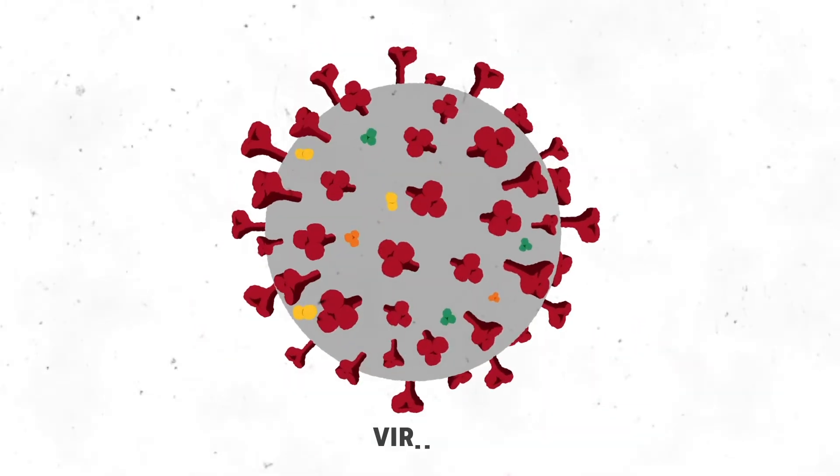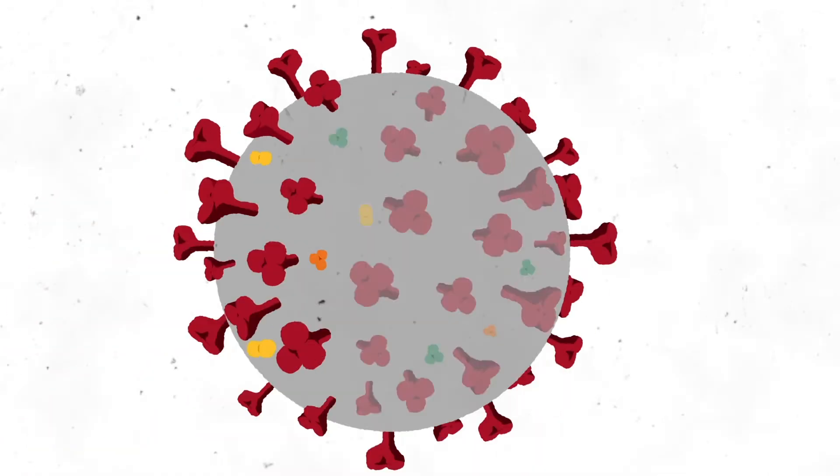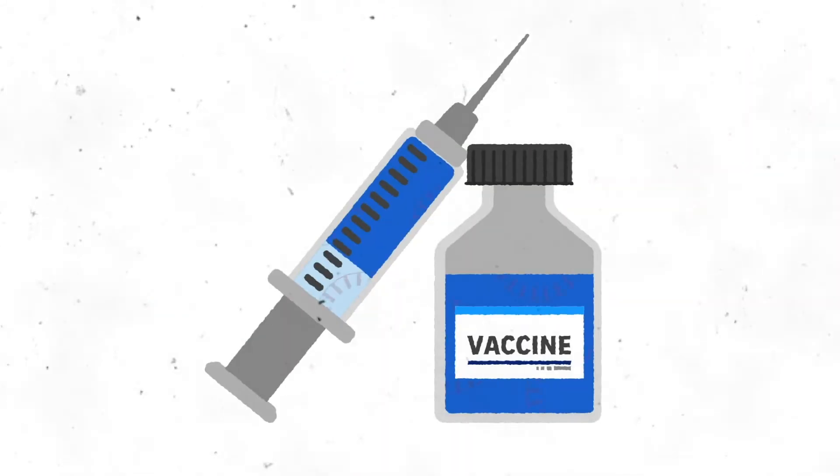Here's how it works. This is the virus. These are called spike proteins. Scientists have isolated the genetic code for those proteins, a set of instructions that are put into the vaccine so your body knows how to make them.